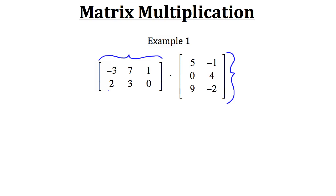Here our first matrix has three columns and our second matrix has three rows. Since those two are equal, we can multiply the two matrices together. The resulting matrix that comes from multiplying these two matrices together will have the same number of rows as our first matrix and the same number of columns as our second matrix. So our resulting matrix should have two rows and two columns.